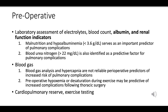Elevated BUN might suggest decreased kidney function or other conditions. Blood gas analysis measures oxygen and carbon dioxide levels in the blood and helps determine how well the lungs move oxygen into the blood. While blood gas analysis and hypercapnia are not consistent predictors of increased perioperative risk, preoperative hypoxemia or desaturation during exercise can indicate increased risk of complications after thoracic surgery.